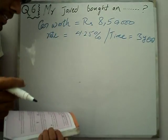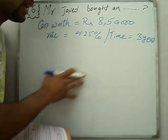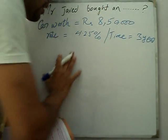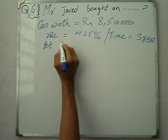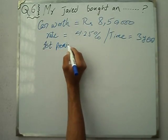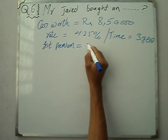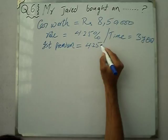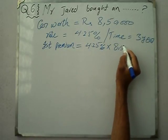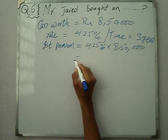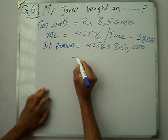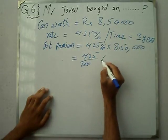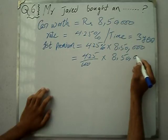Now we need to find the premium. First, we find the first premium, then depreciation is applied, then the second premium, and so on. So first we find the first premium: 4.25% multiplied by 8,50,000.